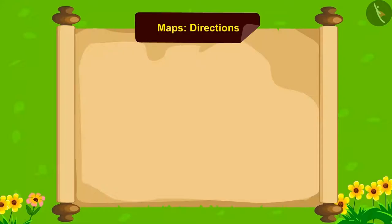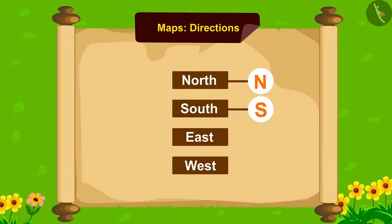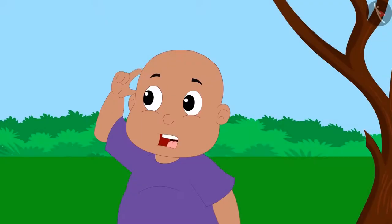There are four cardinal directions. North, South, East and West. Referred by North by N, South by S, East by E and West by W. They can be written like this too.